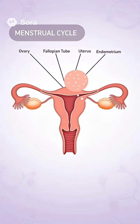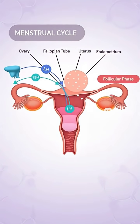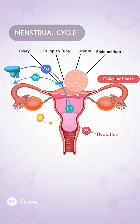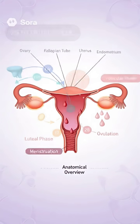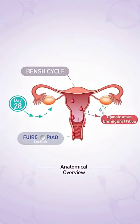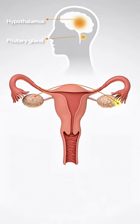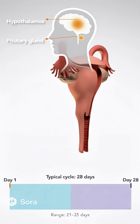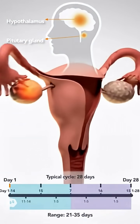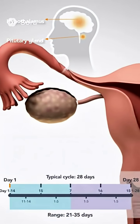Welcome to this detailed explanation of the menstrual cycle, a vital physiological process that prepares the female body for reproduction. In this video, we'll explore each phase and the key hormonal interactions. The menstrual cycle is governed by a delicate interaction between the hypothalamus, pituitary gland, and ovaries, known collectively as the hypothalamic-pituitary-ovarian axis.